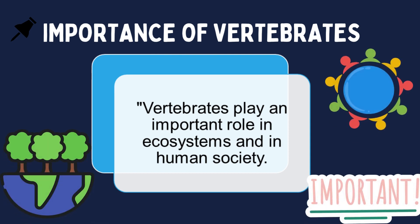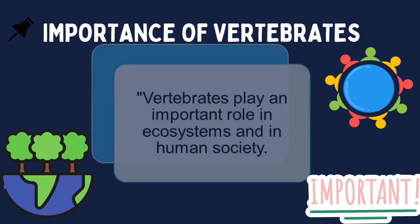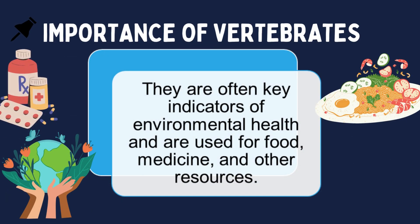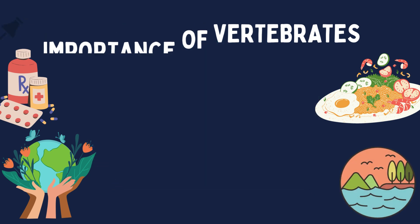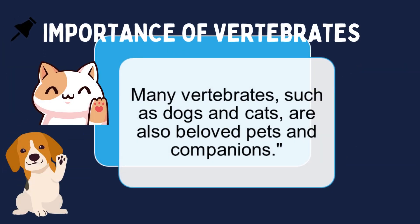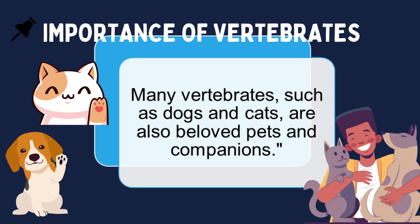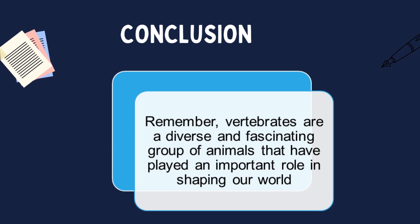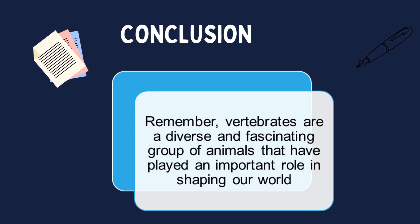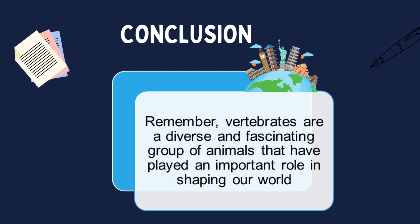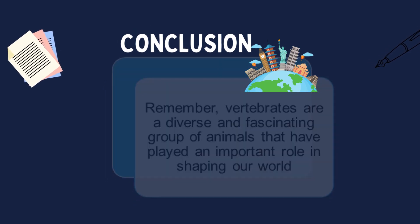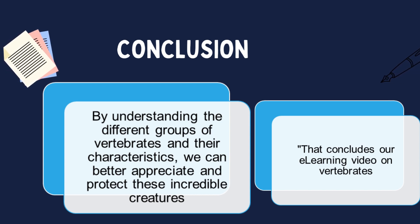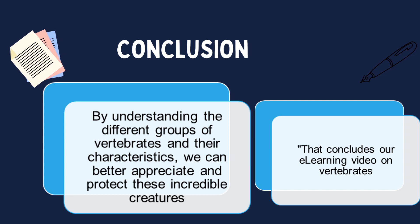Vertebrates play an important role in the ecosystem and in human society. They are often key indicators of environmental health and are used for food, medicine, and other resources. Many vertebrates such as dogs and cats are also beloved pets and companions. Vertebrates are a diverse and fascinating group of animals. By understanding the different groups of vertebrates and their characteristics, we can better appreciate and protect these incredible creatures.